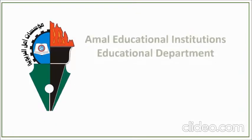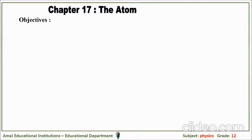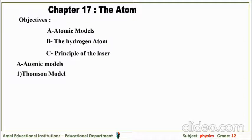Hello, our students of General Science and Life Science at Amal Education Institution. I am your physics advisor, here to discuss Chapter 17, titled 'The Atom.' In this chapter we look for the following objectives: atomic models, the hydrogen atom, and the principle of the laser — the last topic only for General Science. Atomic models: we start mainly with Thomson and his model.